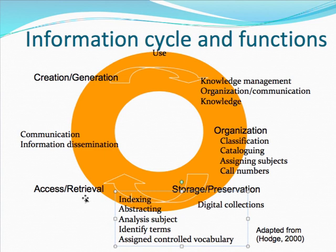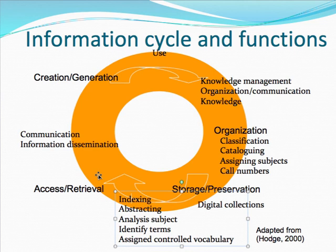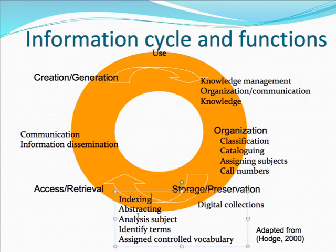Then comes the function of access and retrieval — that's what we or our client will do. That information is then communicated, and that's what is called information dissemination. Looking at the information cycle this way, we can see that we librarians can be part of each stage. Some stages are more librarian-oriented: knowledge management, organization, storage, and preservation.